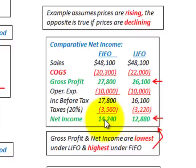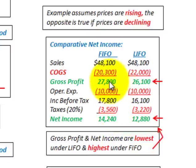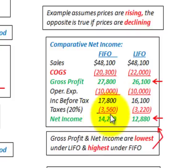FIFO has a greater net income than LIFO. Looking at both gross profit and net income, they are lowest under LIFO and highest under FIFO. Gross profit is higher under FIFO than LIFO, and net income is also higher under FIFO than LIFO.